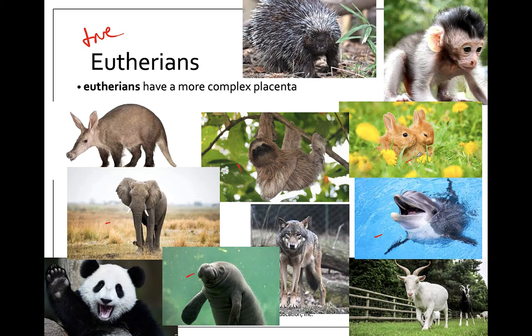Lagomorpha is the hares and rabbits. Carnivora — here's my wolf — Carnivora includes dogs, weasels, bears, seals, walrus, and anything that's a carnivore. Carnivora actually includes the panda bear too — despite the fact that they mostly eat bamboo, they do have carnivore traits. Cetartiodactyla includes cattle, pigs, sheep, and deer. Rodentia is the rodents — squirrels, mice, beavers, rats, and porcupines. Primates includes all monkeys and lemurs, chimps, gorillas, as well as humans.